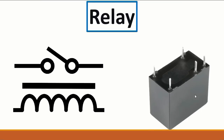Next we have the relay. The relay always contains an inductor and a switch. When the inductor is energized — when current passes through it — it will pull up the switch, the switch will close, and voltage will pass from one side to the other.